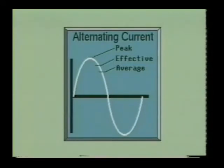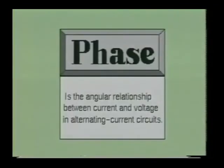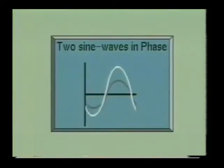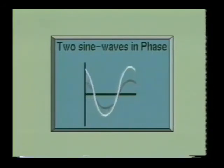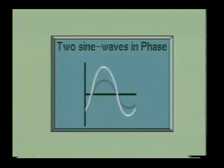Alternating currents are more complex than direct currents. Therefore, more factors must be considered. One factor which makes the study of AC more complex is the matter of phase. Phase is a measure of time. It shows how one sine wave varies with respect to another sine wave of the same frequency. When two or more sine waves, either current or voltages or both, are in the same phase, they pass through corresponding values at the same time. In other words, they both pass through zero at the same time, and they both reach their peak values at the same time. This continues to happen during each cycle.